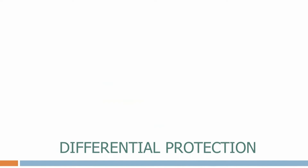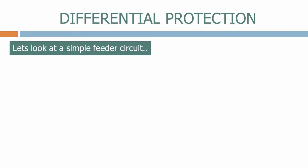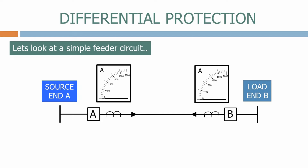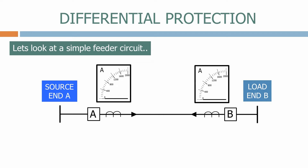Let's look at a simple feeder circuit. Here we have a feeder circuit with End A, which is the source of the power, and End B, which is the load. We therefore assume that power will flow from End A through the feeder and onto End B. To monitor the feeder, the differential feeder protection needs to compare the currents flowing through ends A and B.